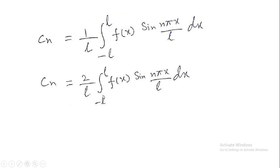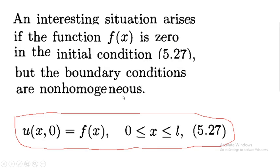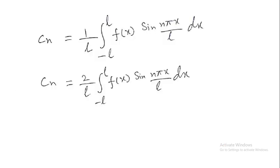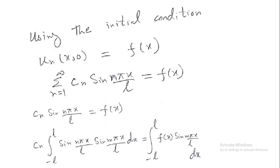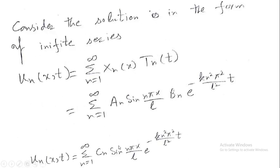For the interval 0 to L, this becomes cₙ = (2/L)·∫₀ᴸ f(x)·sin(nπx/L) dx. With this the general solution is: u(x,t) = Σ(n=1 to ∞) cₙ·sin(nπx/L)·e^(−kn²π²t/L²).